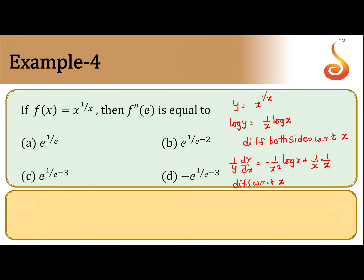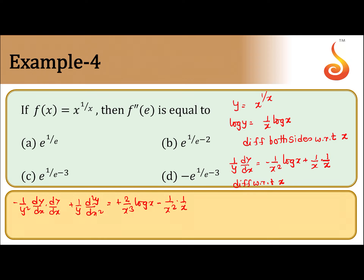What we get is minus 1 by y square dy by dx into dy by dx, using the product rule, plus 1 by y d²y by dx² is equal to 2 by x cube log x, minus 1 by x square into 1 by x, because the derivative of log x is 1 by x, and the derivative of 1 by x square is minus 2 by x cube.